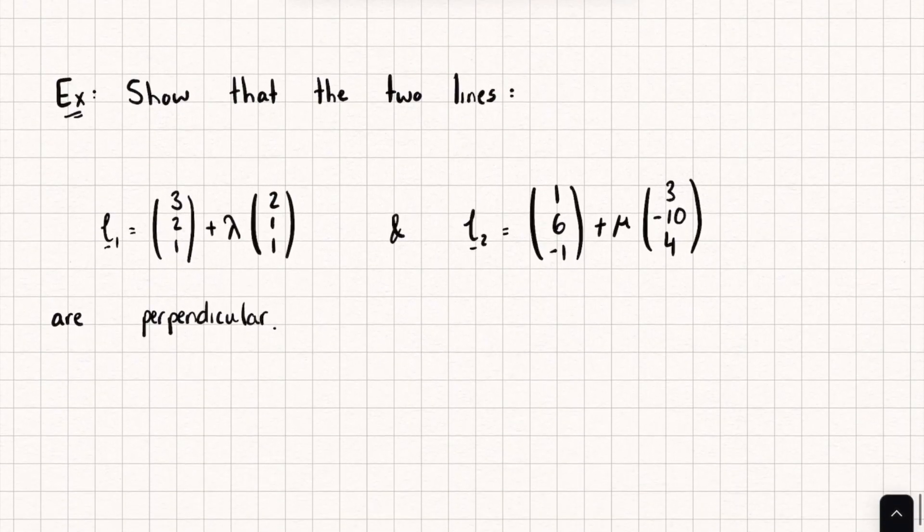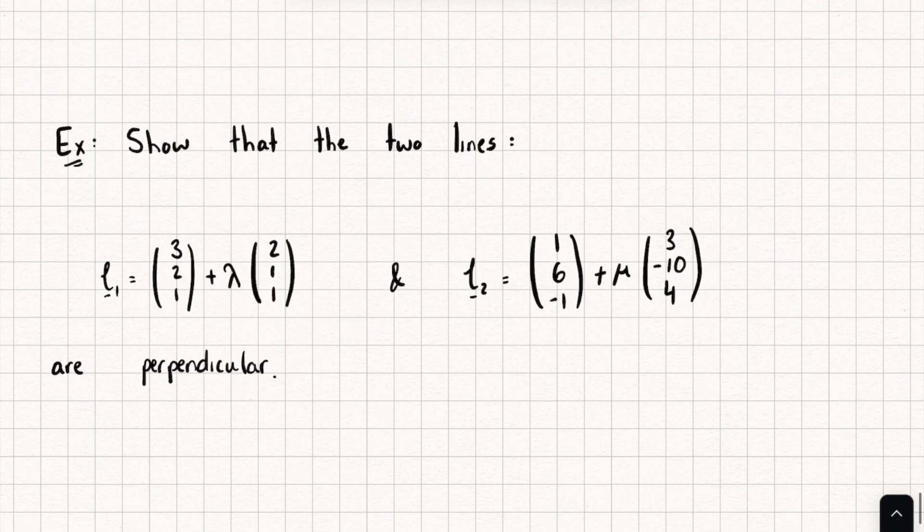Okay, let's take a look at another example. So here we're asked to show that the two lines, L1 and L2, are perpendicular. So remember from the previous video, two vectors are perpendicular if their dot product is equal to 0. And so again, we're only interested in the direction vectors, so this one here and this one here. So all we're going to have to do is take the dot product of these two vectors. If it is equal to 0,